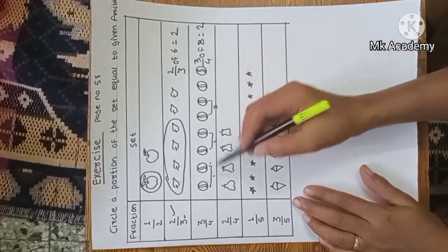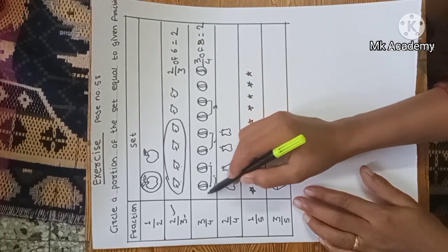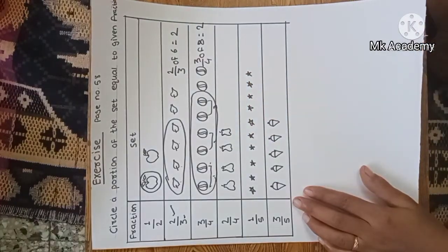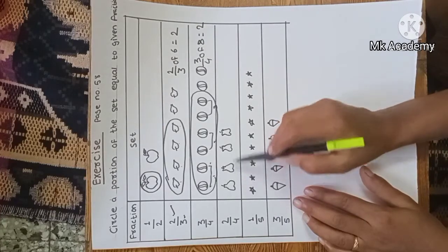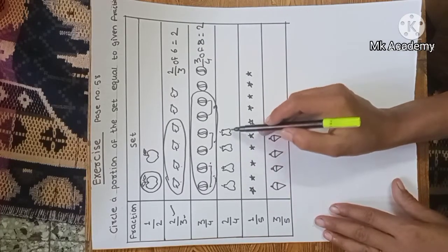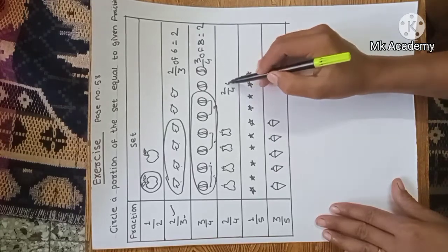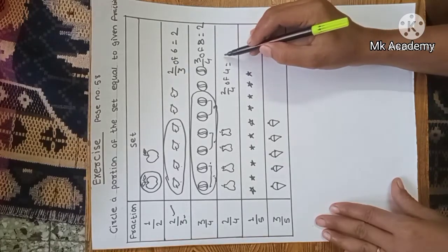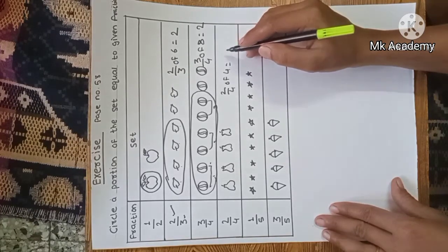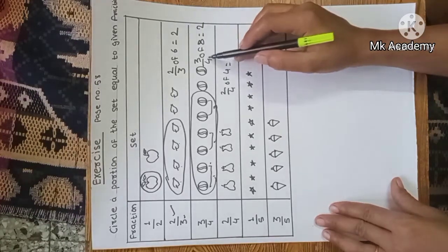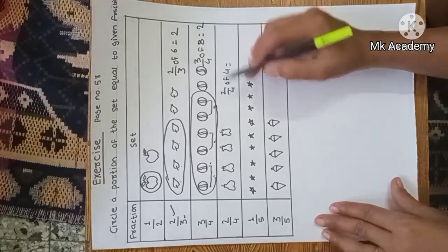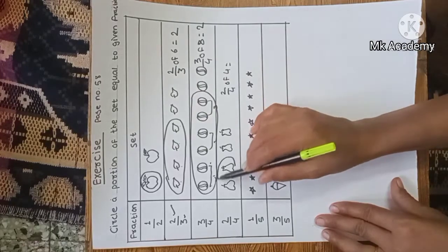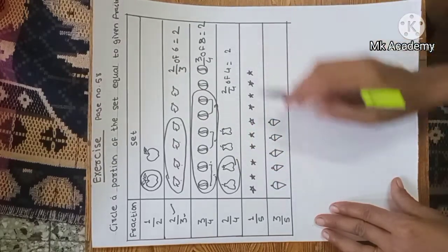We circle three sets out of four sets. Understood. Now, two upon four: we count the guavas — one, two, three, four. Two-fourths of four equals two, so we have to color two guavas. Understood.